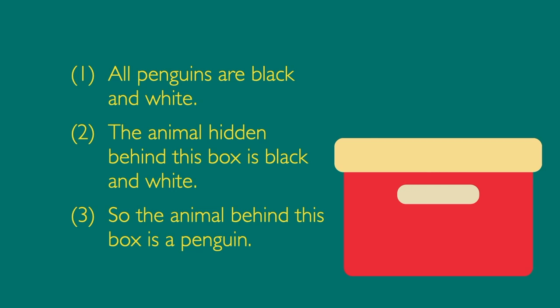But now look at this argument: all penguins are black and white; the animal hidden behind this box is black and white; so the animal behind this box is a penguin. Can you think of a counter-example? That is, can you imagine a situation where it really is true that all penguins are black and white, and it really is true that the animal behind the box is black and white, but it's false that the animal behind the box is a penguin?